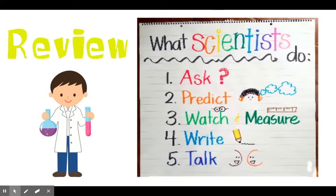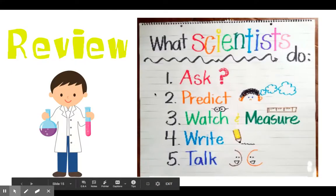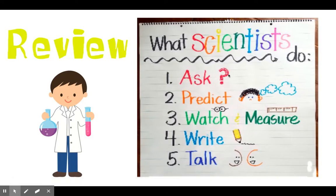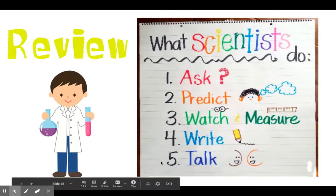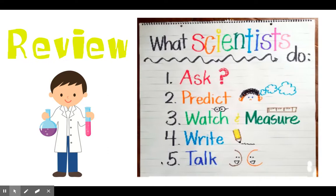Now let's review a little bit. Remember what scientists do? First, they ask questions — they wonder. Then they predict; they hypothesize; they wonder what's going to happen. Number three, they watch and measure — very important in order to check and see if things are changing the way they would like. Number four, they write things down; they're collecting data all the time. And last, they share — they talk about it with other scientists or with other people. This is how scientists make the world a better place by sharing their information with everybody.